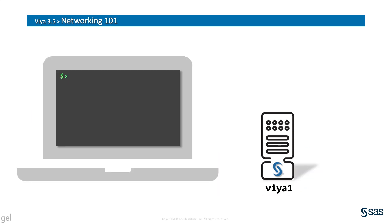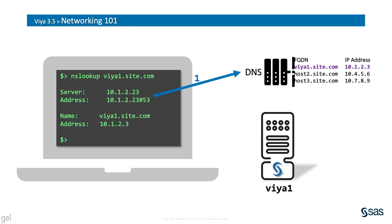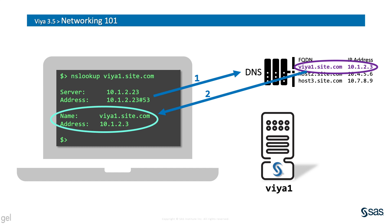Now imagine you're on your PC and you want to communicate with one of the Viya hosts. Use the NSLookup utility to get network information about our server, viya1.site.com. From the results, we can see that your PC reached out to the DNS server, and the DNS server searched for viya1.site.com in its lookup table and returned the IP address it found. That's shown on your PC in the result. This DNS lookup process occurs for each new connection to any machine on the network when referenced by name.